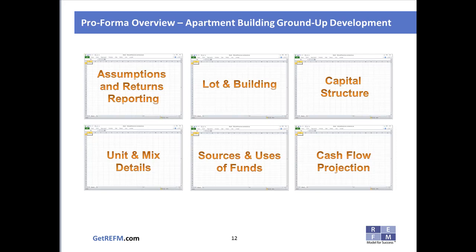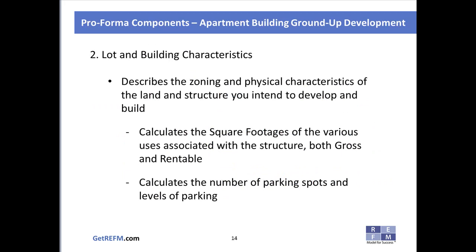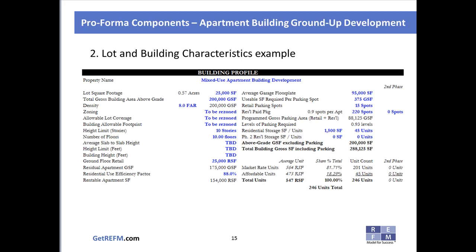The assumptions tab is where all inputs and user assumptions are formatted in bold blue type. The lot and building characteristics tab describes the zoning and physical characteristics of the land and structure to be developed, calculating square footages of various uses on a gross and rentable basis, as well as the number of parking spots and levels of parking.